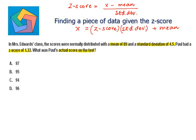So, let's substitute in this formula. x equals z-score is 1.33 times standard deviation is 4.5 plus mean is 89.